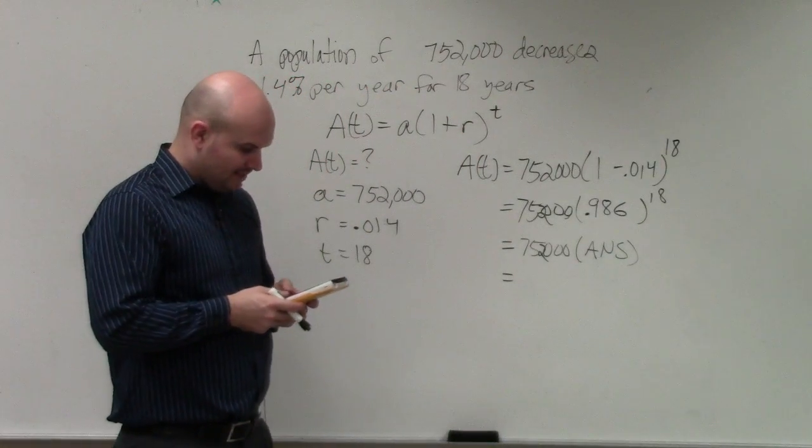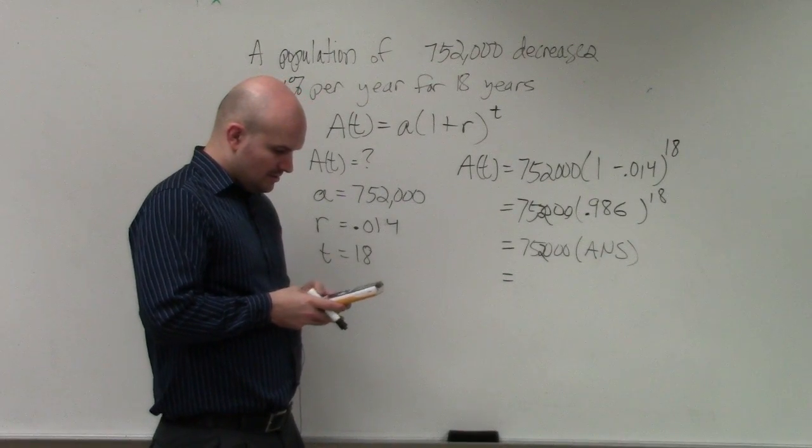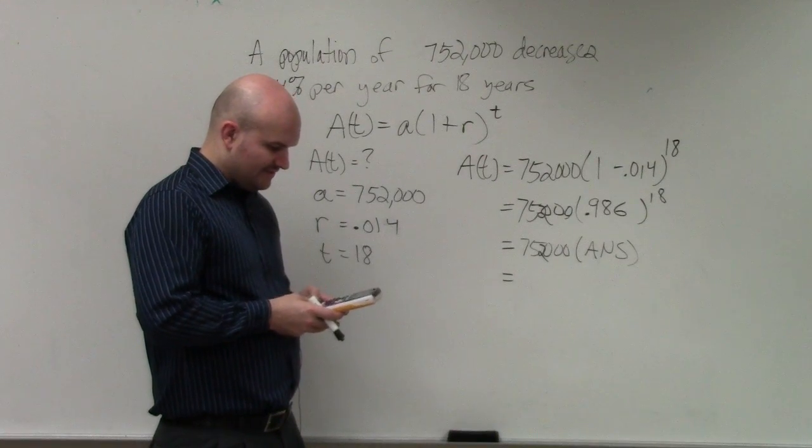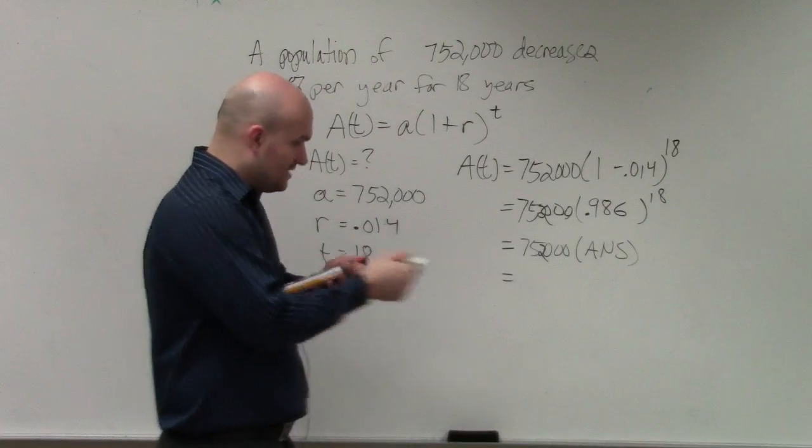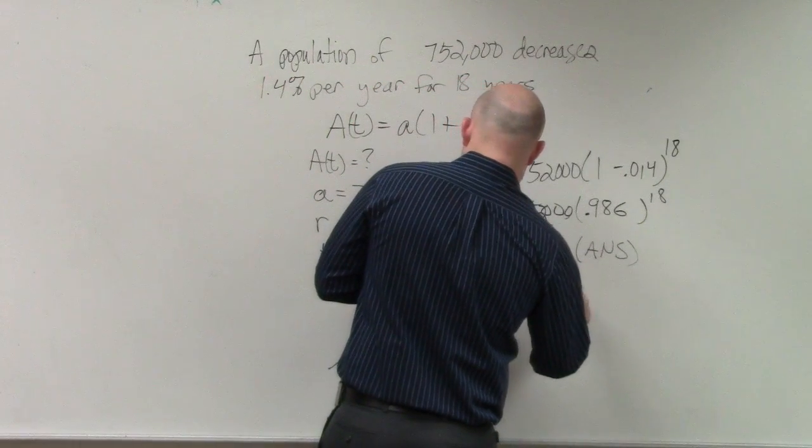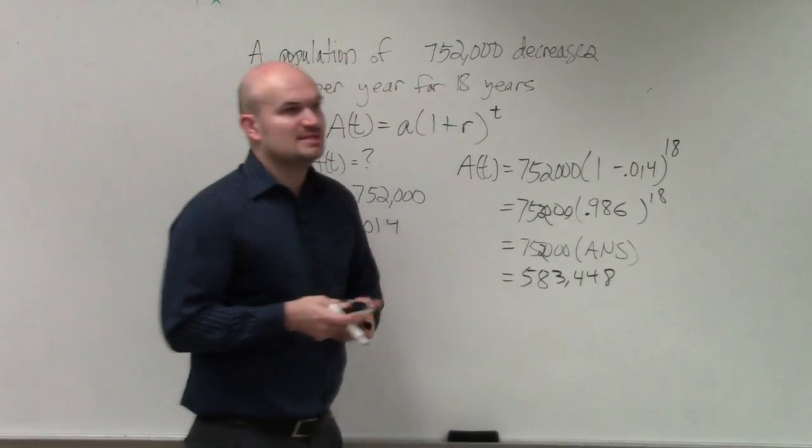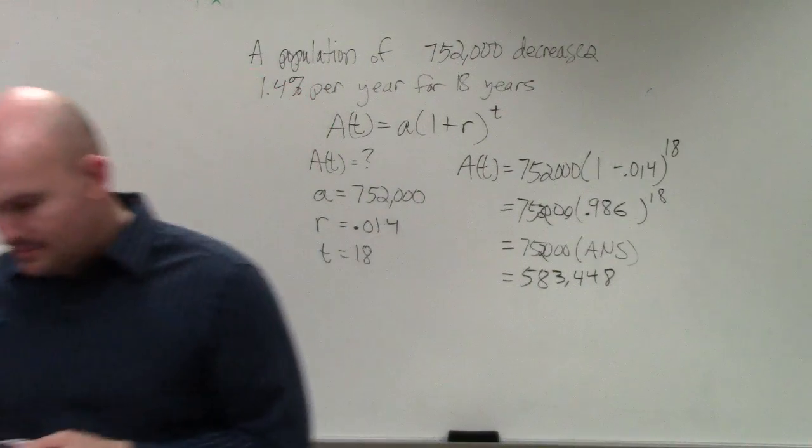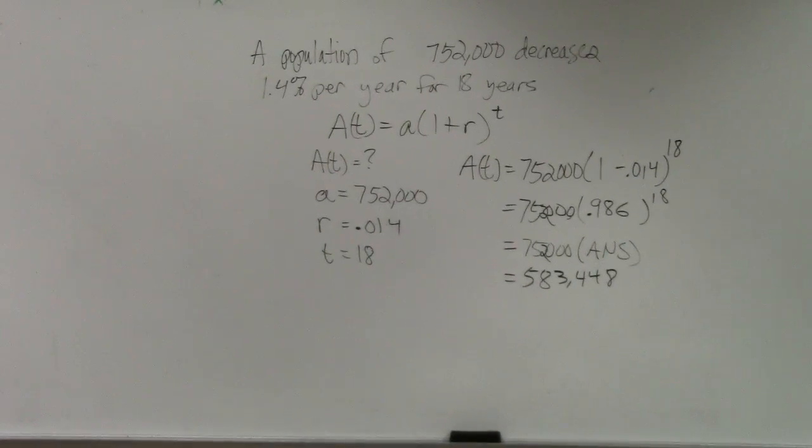So I do 0.986 raised to the 18th power times 752,000. Now I get 583,448. Does that seem a little bit more reasonable? Yes, it does. OK. Anybody have any questions on that?